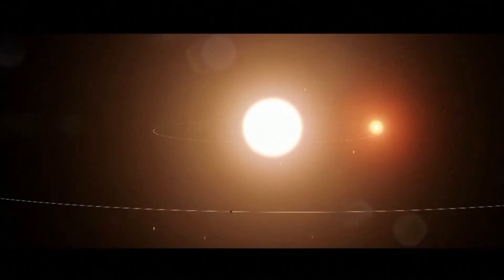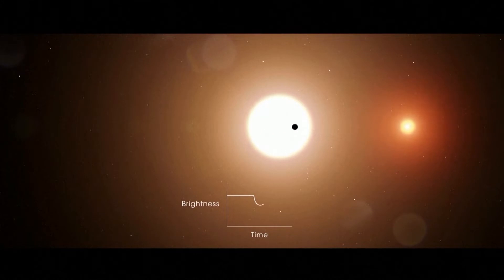TESS hunts for planets in these and other systems by looking for tiny, regular dips in starlight called transits.